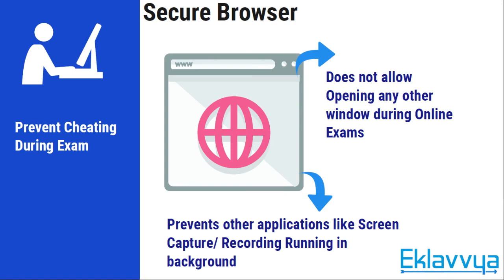The first key feature for making an online examination system secure is a secure browser. A secure browser does not allow opening of any other window during the online examination process. If a candidate has logged into the system and tries to move away from the examination window to open any other website like google.com, the system will show an alert message. You can set up a warning count, and after two or three such instances, the system will automatically suspend the online exam of the user.